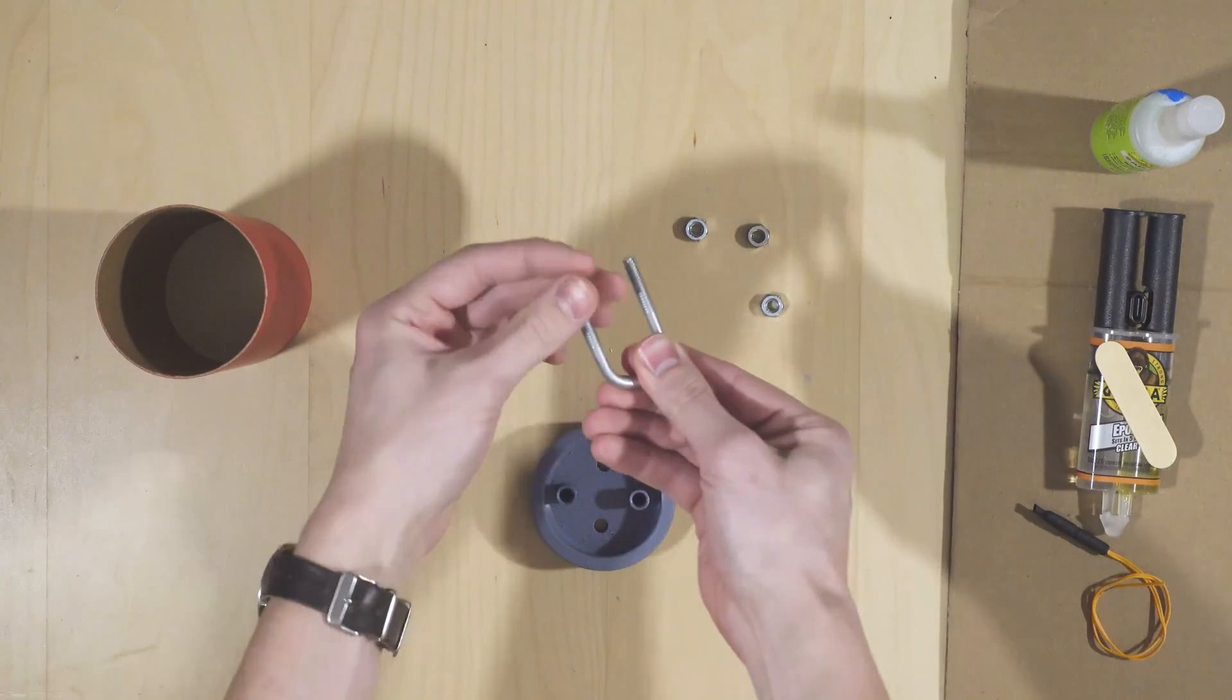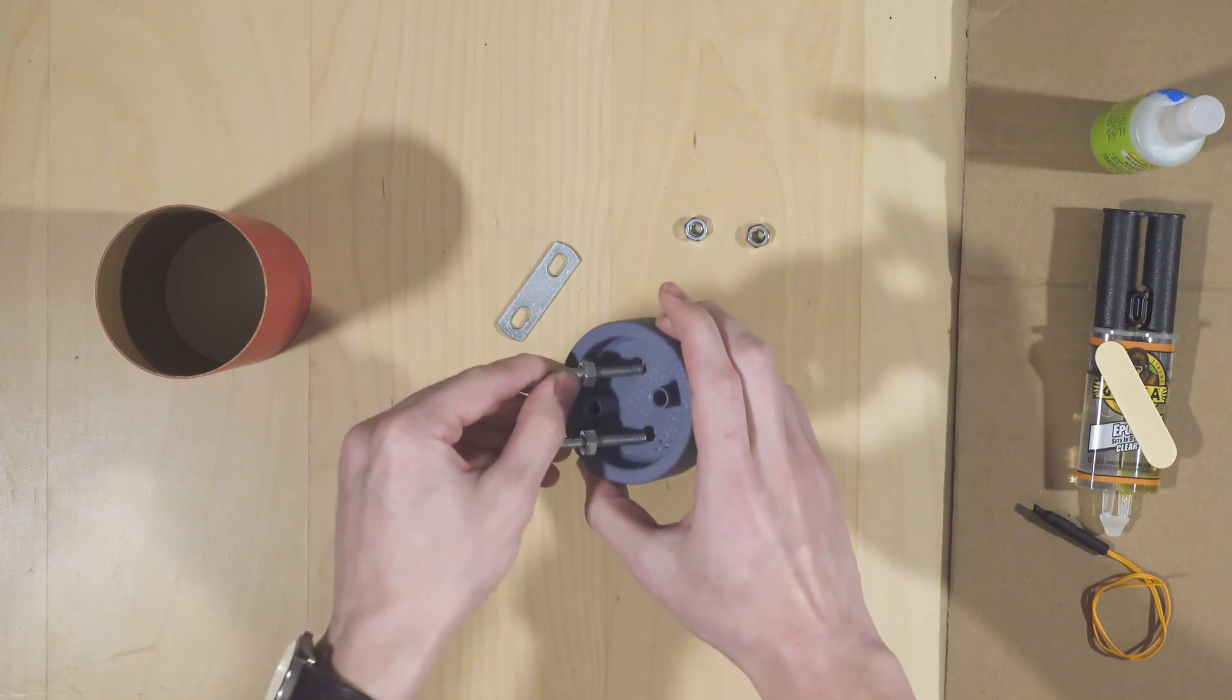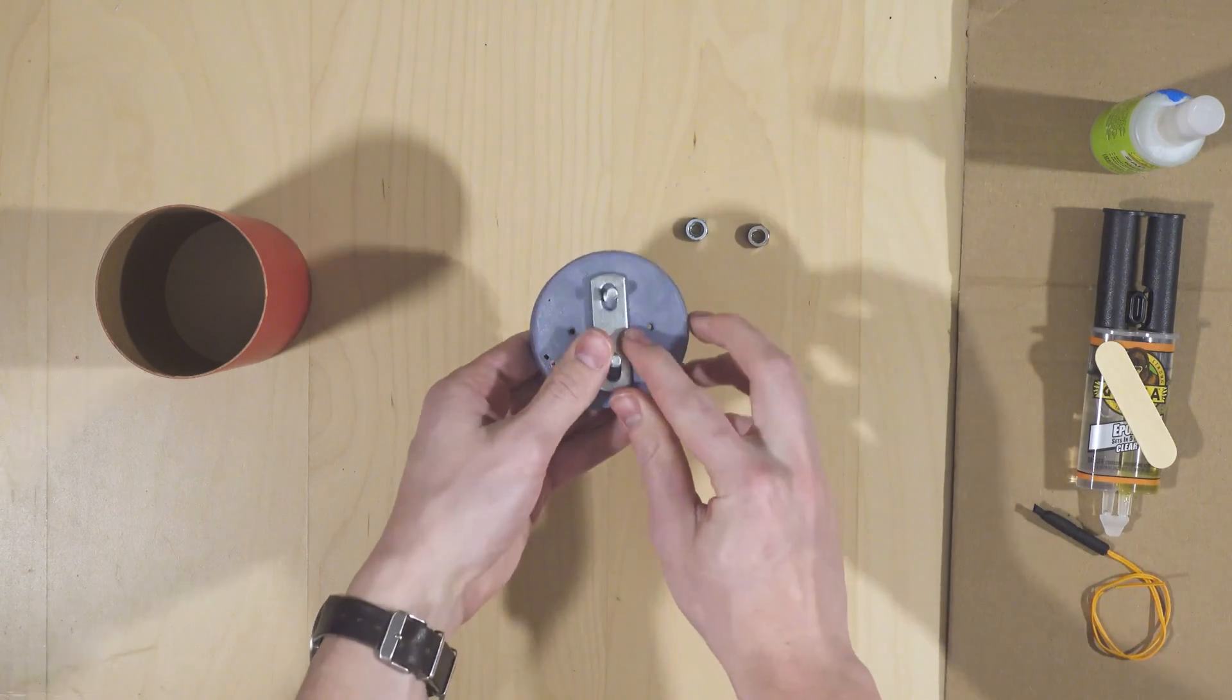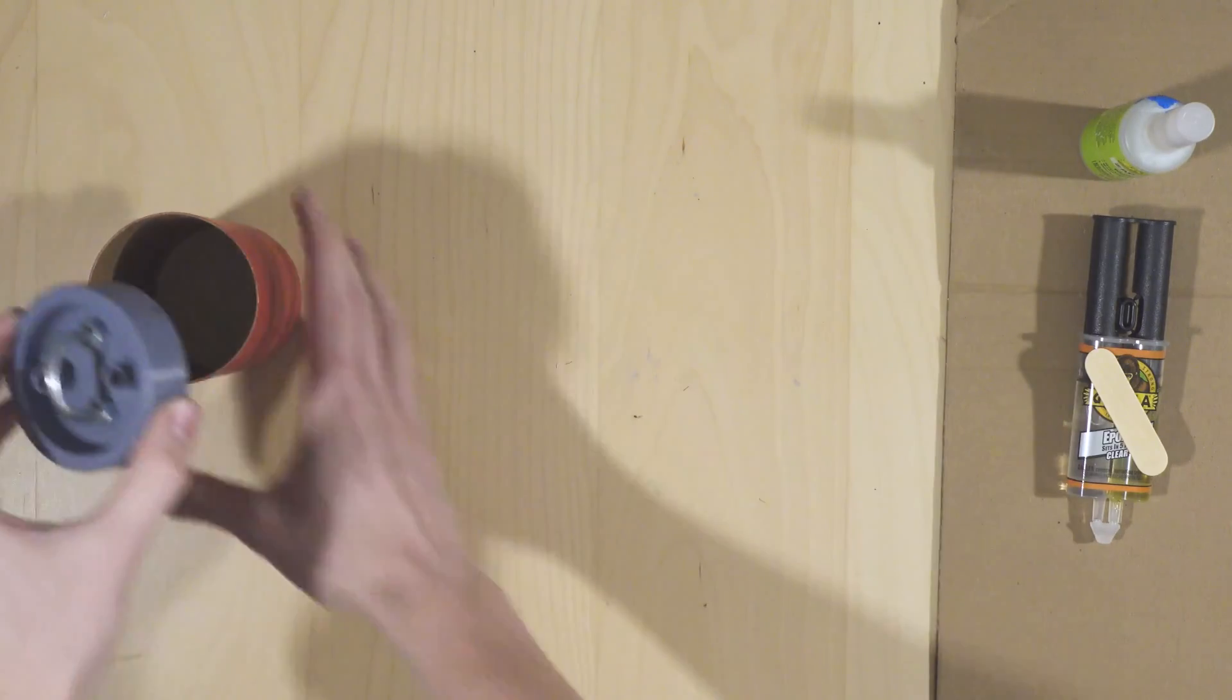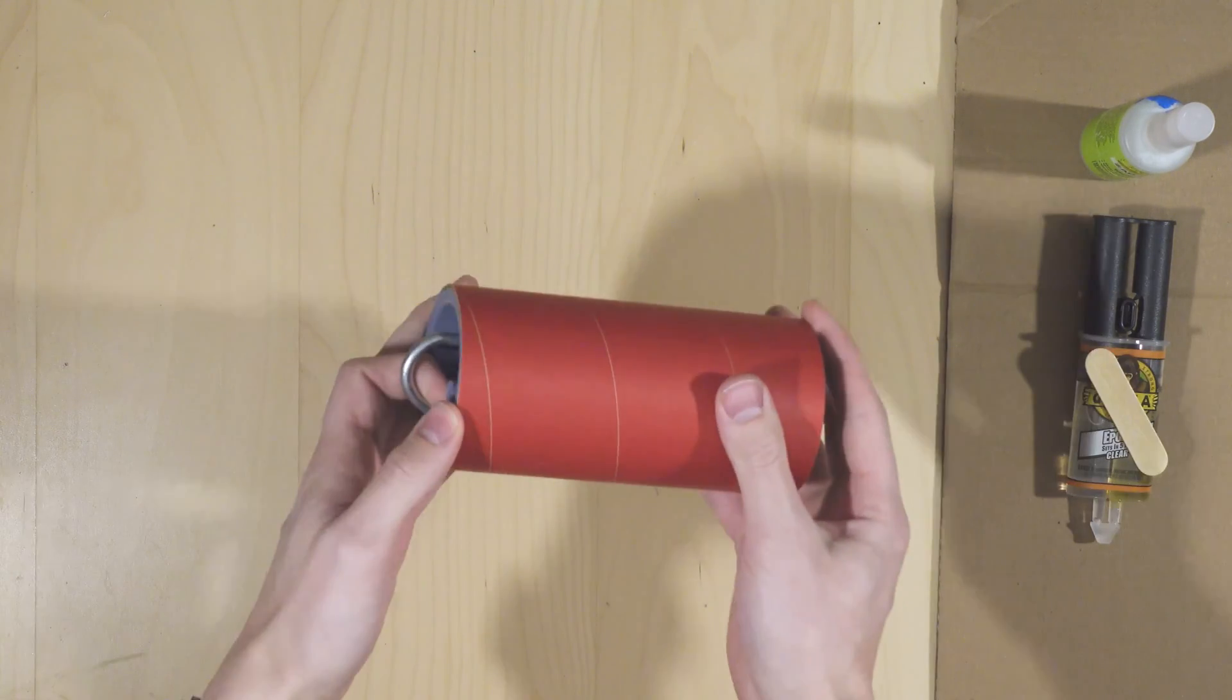Start by screwing two nuts all the way down the threads on a U-bolt. Once that's done, you can thread the U-bolt through the lower bulkhead. Place the metal plate over the exposed U-bolt threads and secure it with the other two nuts. This lower bulkhead will eventually be secured into a body tube coupler that sits between two airframe sections.